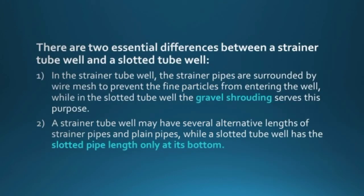There are two essential differences between a strainer tube well and a slotted tube well. In a strainer tube well, the strainer prevents fine particles from entering the water, whereas in a slotted tube well, gravel shrouding serves this purpose. Second, a strainer tube well may have several alternating lengths of strainer pipes and plain pipes, while a slotted tube well has the slotted pipe length only at its bottom. Using strainer tube wells, you can draw water from any number of confined aquifers, but a slotted tube well draws from only a single aquifer.